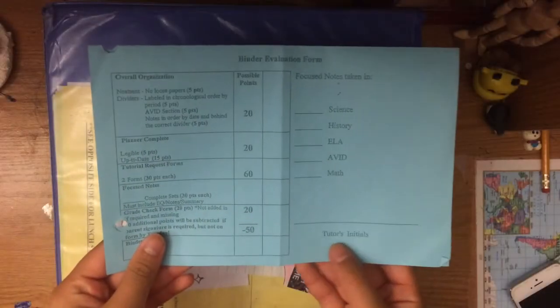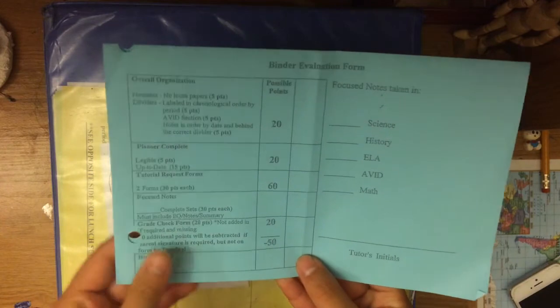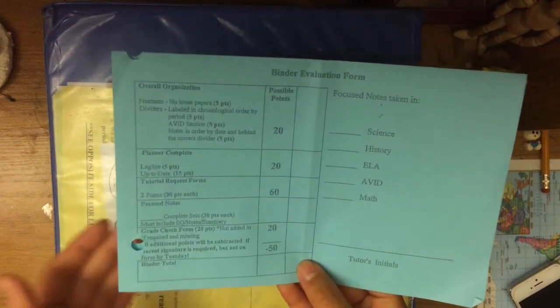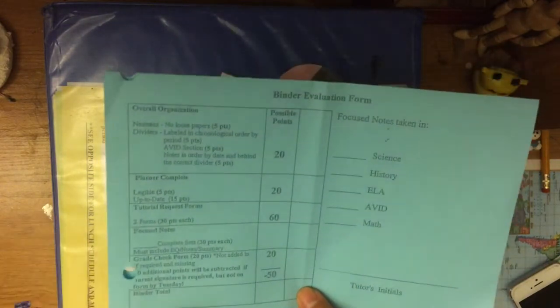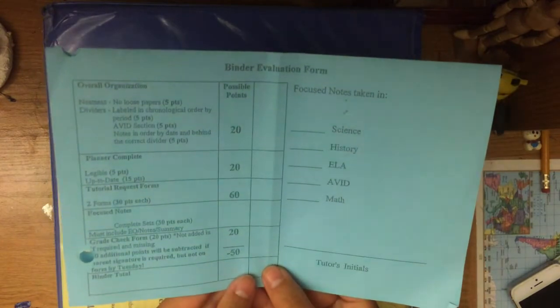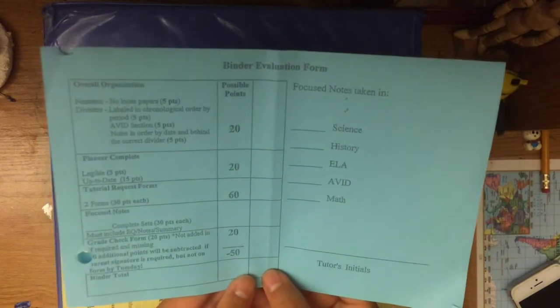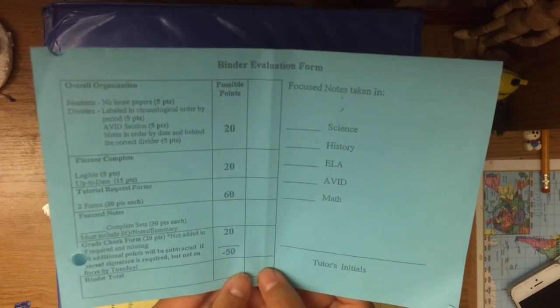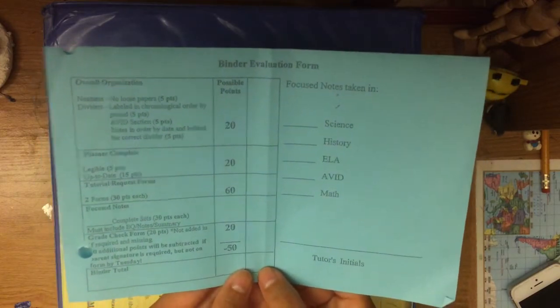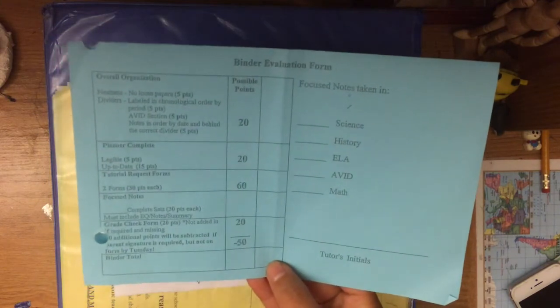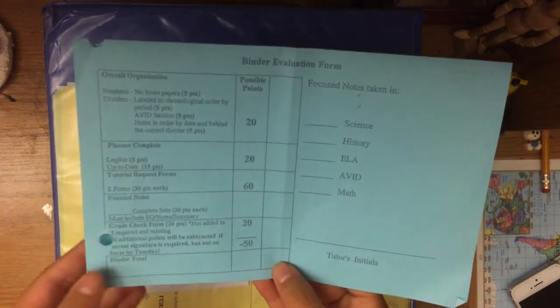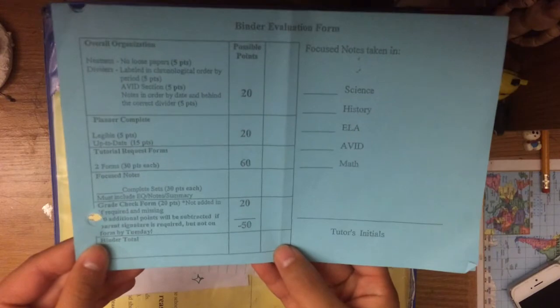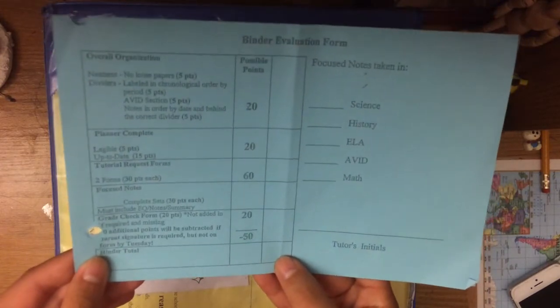Finally, after your binder check is done, you can now check the points. Binder checks are worth 40% of your grade, so it's important you get all the points possible. Overall organization is worth 20 points, planner completion is also worth 20 points, your TRFs are worth 60 points, focus notes are worth 30 points each, and the number of focus notes you have depends on the amount that your teacher assigns you. Your grades are also worth 20 points.